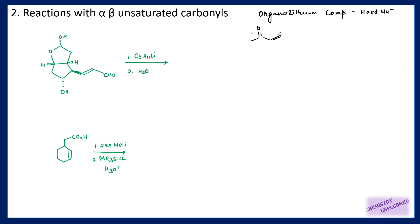Two types of additions are possible: one is direct addition, the second is conjugate addition. This carbon is our soft electrophile and this carbonyl carbon is the hard electrophile. So a soft nucleophile will attack on the soft carbon and a hard nucleophile will attack on the carbonyl carbon. Because organolithium compounds are hard nucleophiles, they will attack on the carbonyl carbon.